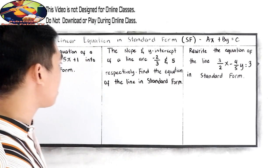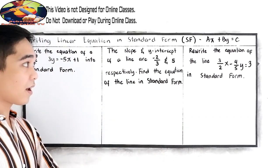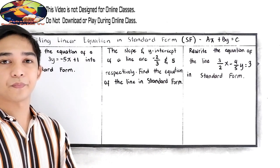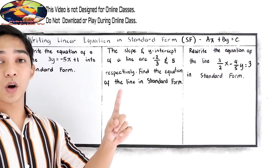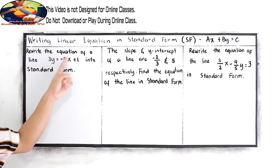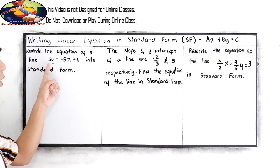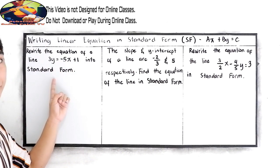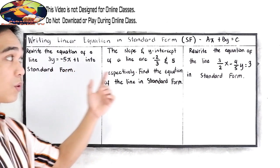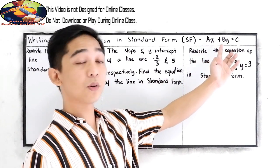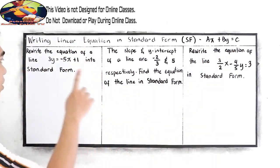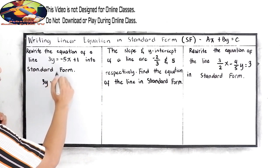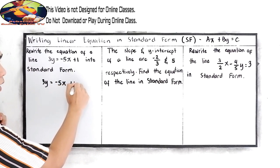I have problems on the board, and these are the possible problems that you are going to encounter. Let's start with number one. Rewrite the equation of a line, 3y = -5x + 1, into standard form. We're going to write it as Ax + By = C. Copy the given: 3y = -5x + 1.